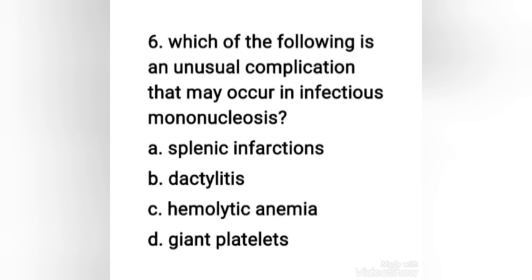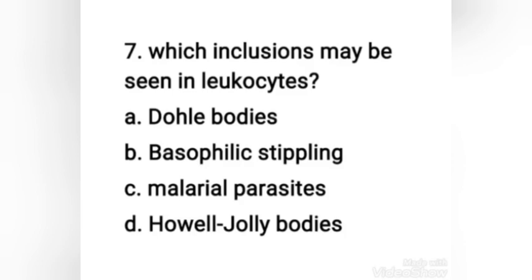Next question: which of the following is an unusual complication that may occur in infectious mononucleosis — splenic infarctions, dactylitis, hemolytic anemia, or giant platelets? The right answer is option C, hemolytic anemia. Occasionally, patients with infectious mononucleosis develop a potent cold agglutinin with anti-i specificity. This autoantibody can cause strong hemolysis and hemolytic anemia, making it an unusual complication of infectious mononucleosis.